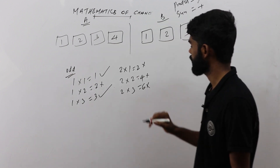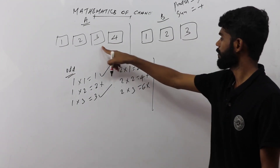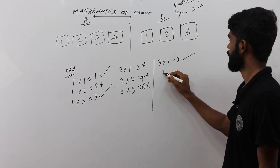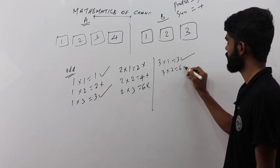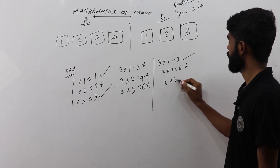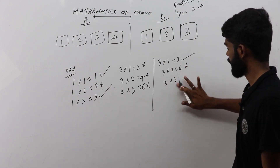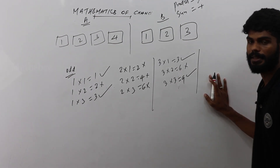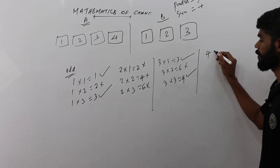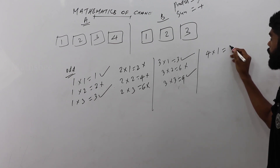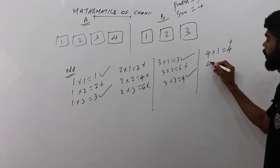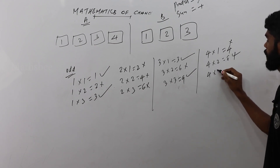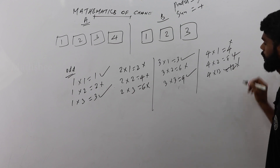Continuing: 3×1=3 is odd — correct. 3×2=6 is wrong. 3×3=9 — correct, that's odd. Next, 4×1=4 is wrong, 4×2=8 is wrong, 4×3=12 is also wrong. So all products involving 4 are even.